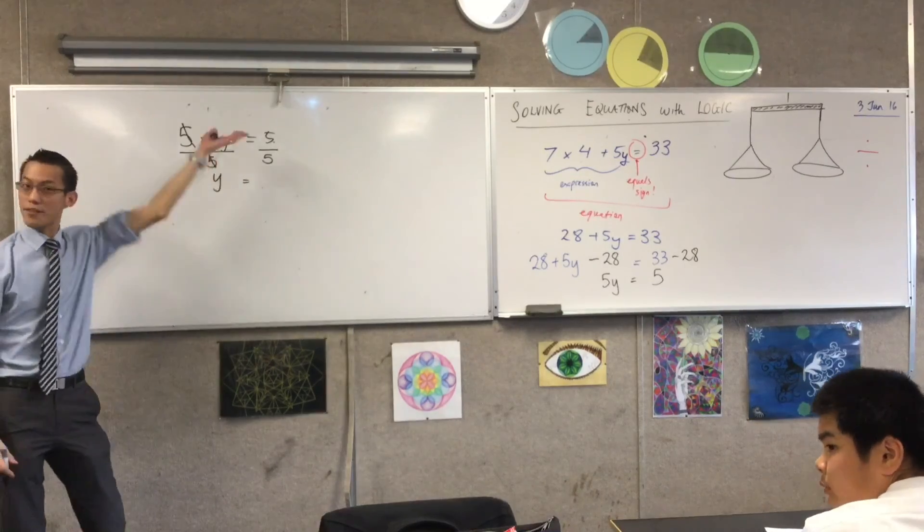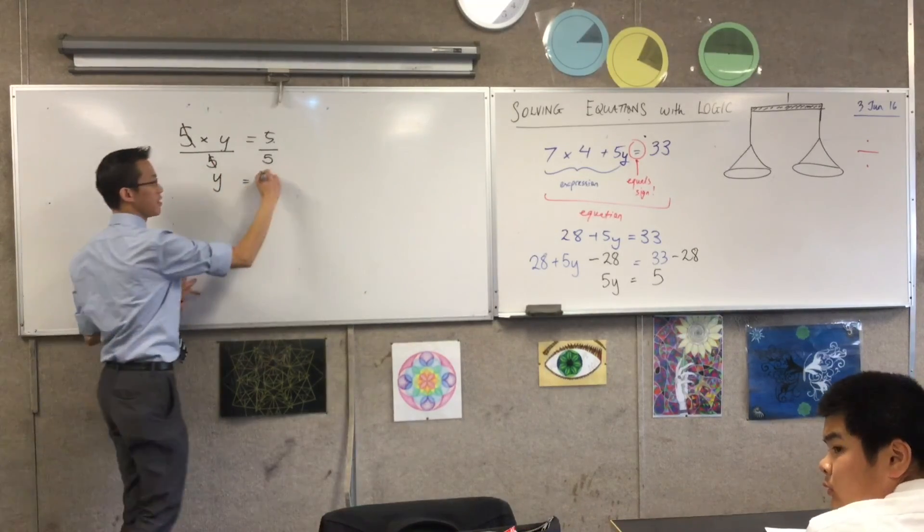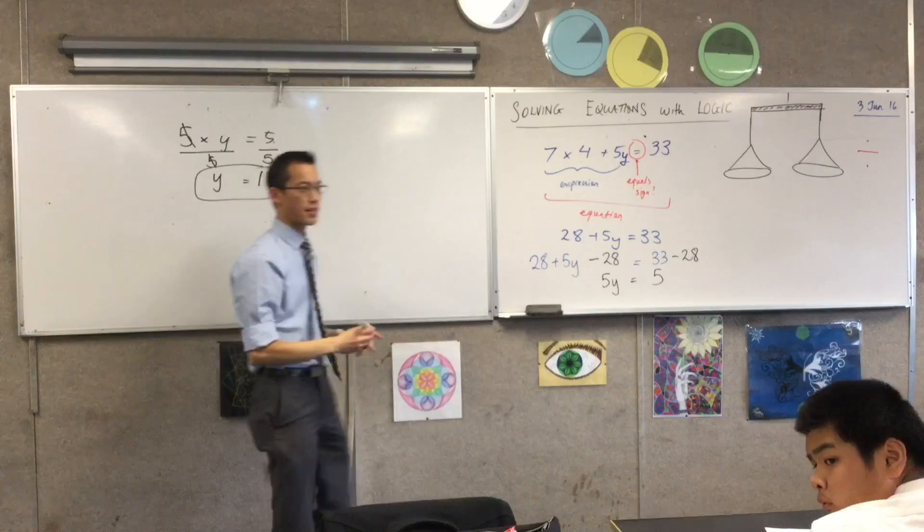And on the right-hand side, 5 divided by 5, cancel again. 5 is 1, and there's our answer.